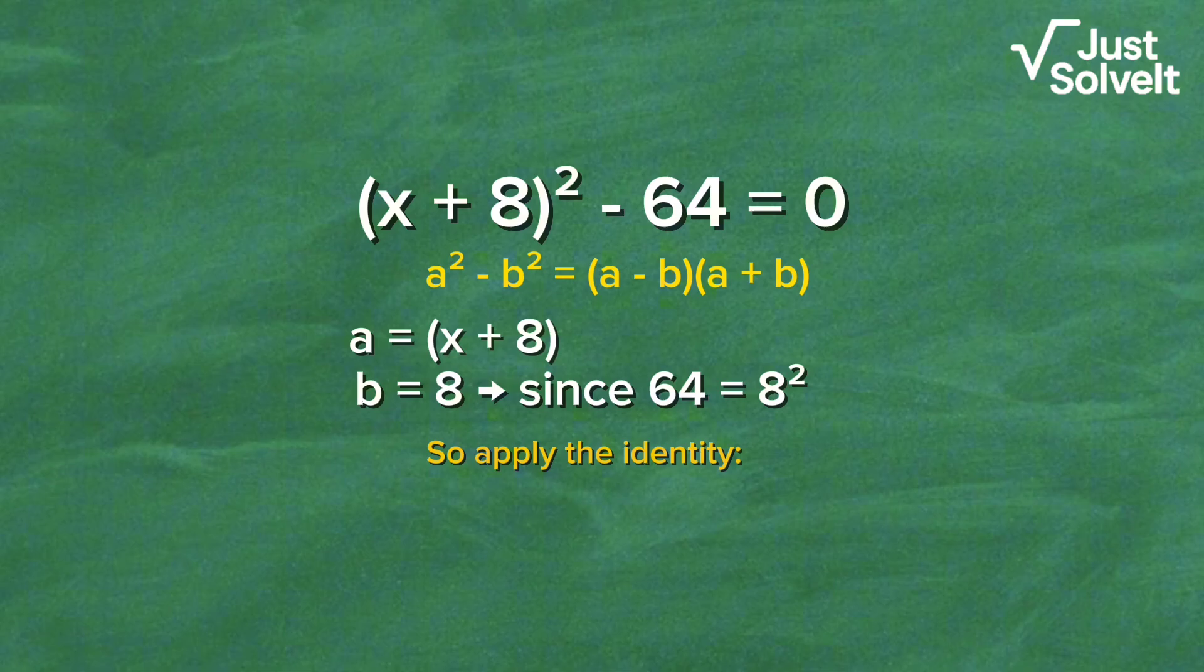Apply the identity: (x + 8 - 8)(x + 8 + 8) equals 0. That becomes x(x + 16) equals 0.